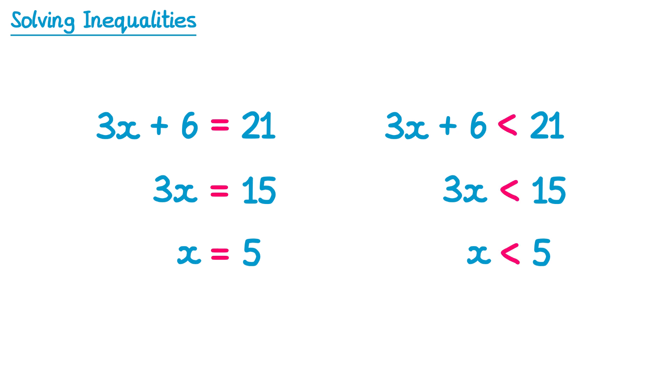The solution to the inequality looks really similar to the solution to the equation — the only difference is the equation has an equal sign whereas the inequality has a less than sign. It also doesn't matter which inequality symbol we use. We could have used a greater than sign, in which case the solution would be x is greater than 5. Or it could have been a greater than or equal to sign, in which case the solution would be x is greater than or equal to 5. So to solve an inequality, you just solve it like it's an equation, but make sure you write the inequality symbol instead of the equal sign.